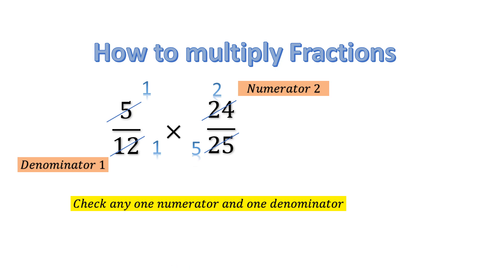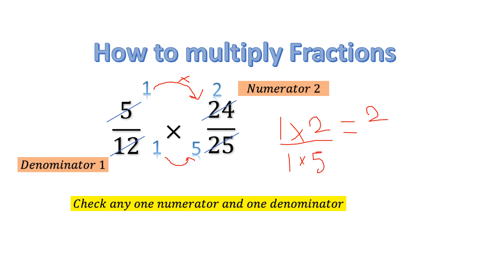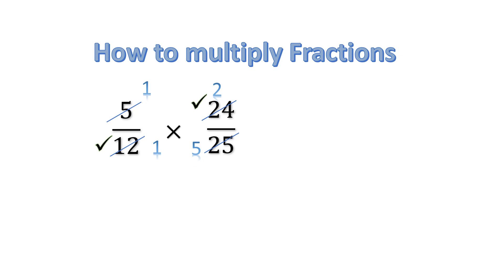So now we are going to multiply numerator with numerator to get the new numerator. We will forget all the old numerators and denominators. The new numerator is 1 multiplied by 2, which gives 2. We multiply denominator with denominator: 1 multiplied by 5 gives 5. So the answer is 2 over 5.